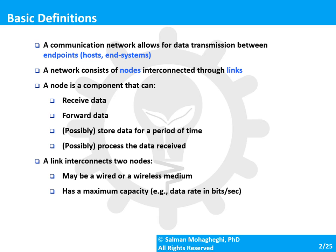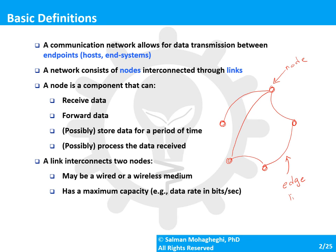We often picture a communication network as a graph. In this graph, each of the devices would be a node, and these nodes are connected to one another through edges. A node is a device that can send data, receive data, forward data, and sometimes store or process data locally. The links represent communication interconnections between these different nodes.